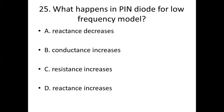Twenty-fifth one. What happens in a PIN diode for the low frequency model? Option A: reactance decreases. Option B: conductance increases. Option C: resistance increases. Option D: reactance increases. Answer: Option D, reactance increases.